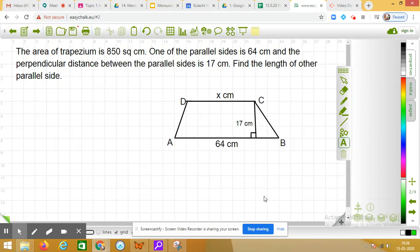The area of trapezium is 850 square centimeter. One of the parallel sides is 64 centimeter and the perpendicular distance between the parallel sides is 17 centimeter. Find the length of the other parallel side.